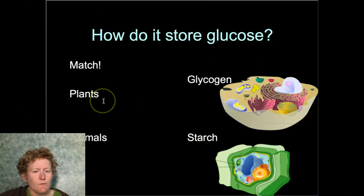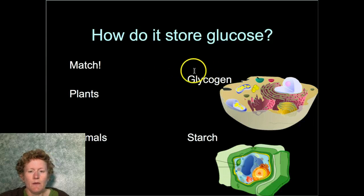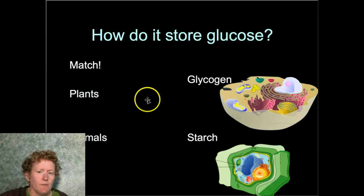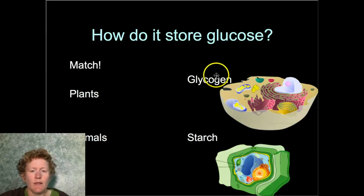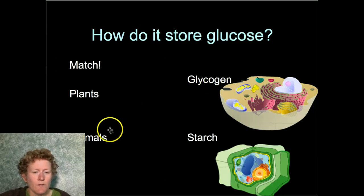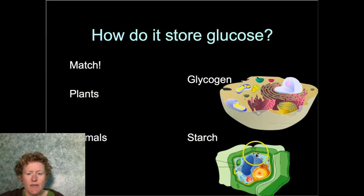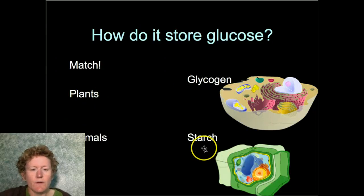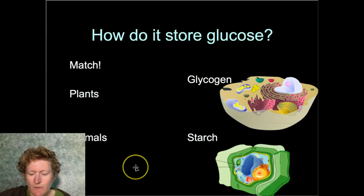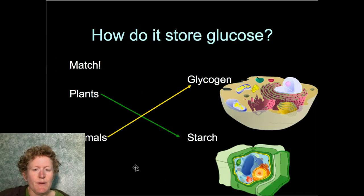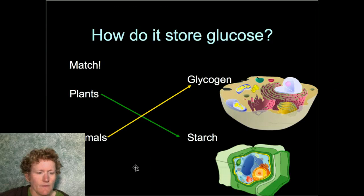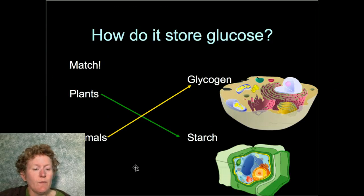How do we store glucose? Animals store glucose as glycogen — here's an animal cell storing glucose as glycogen. Plants store glucose as starch. Both have branched chains and both are made of glucose, but they are different kinds of molecules.